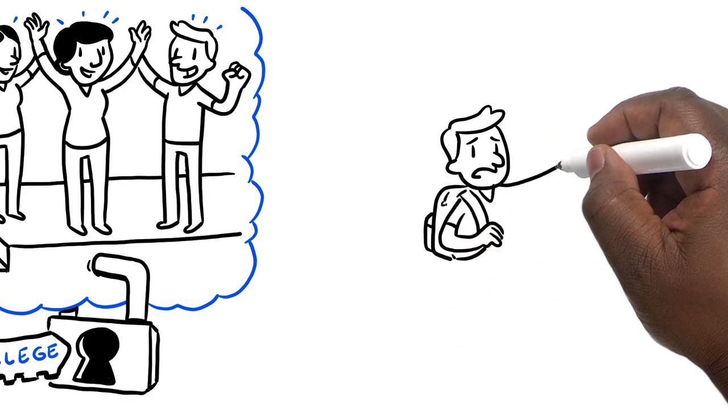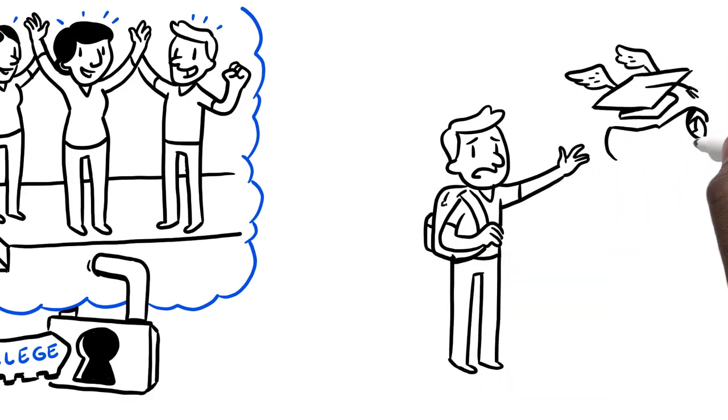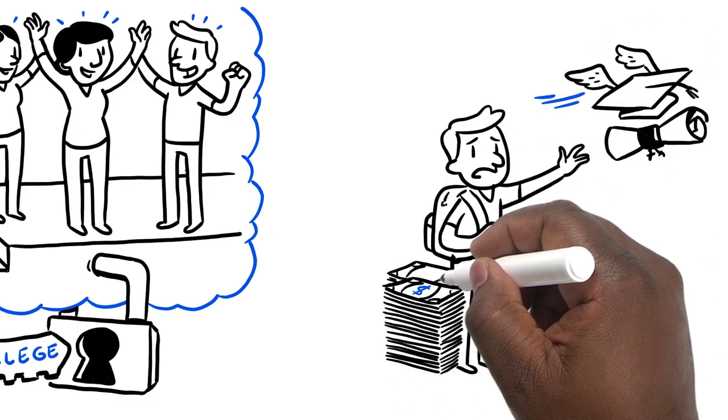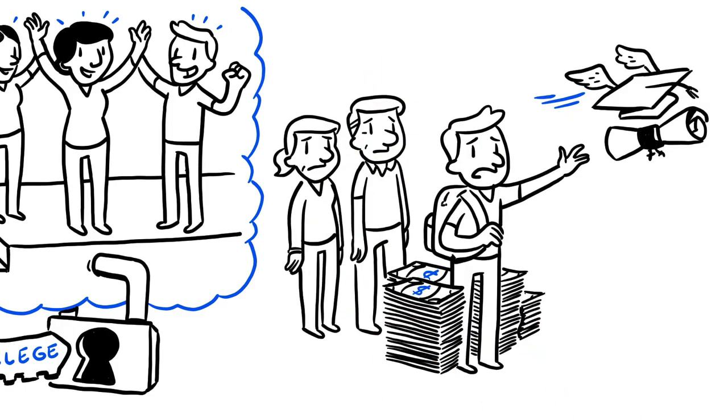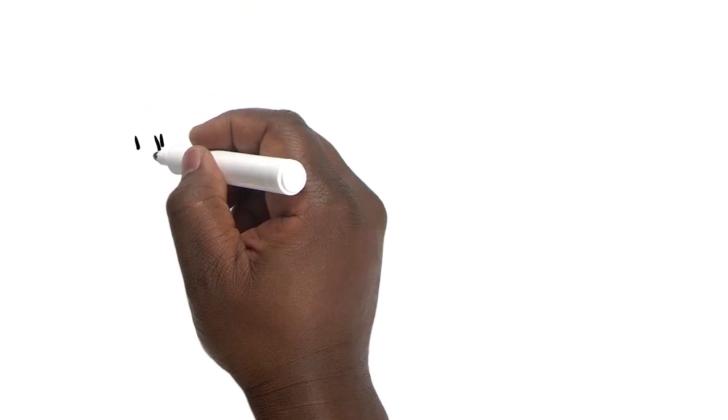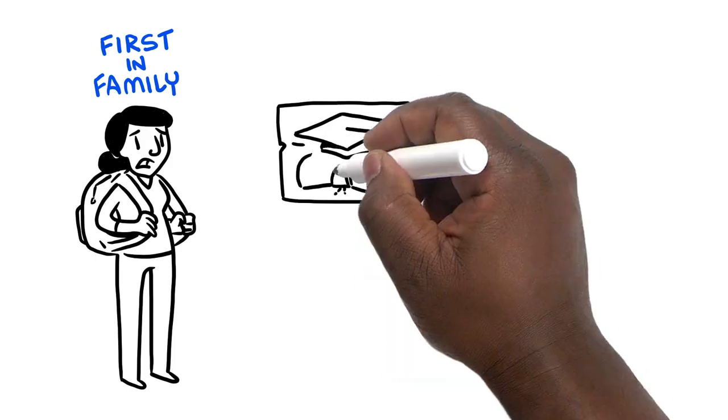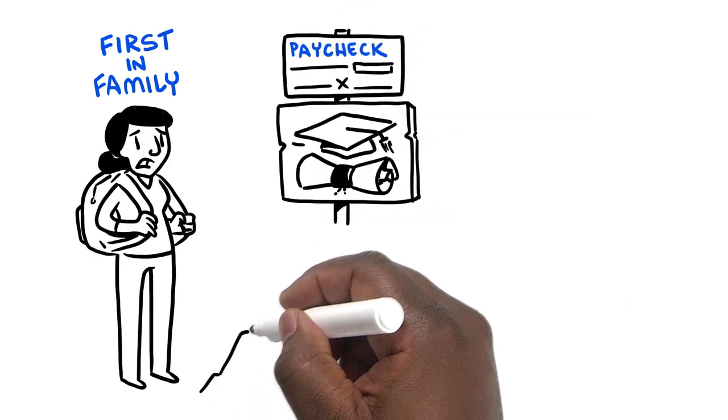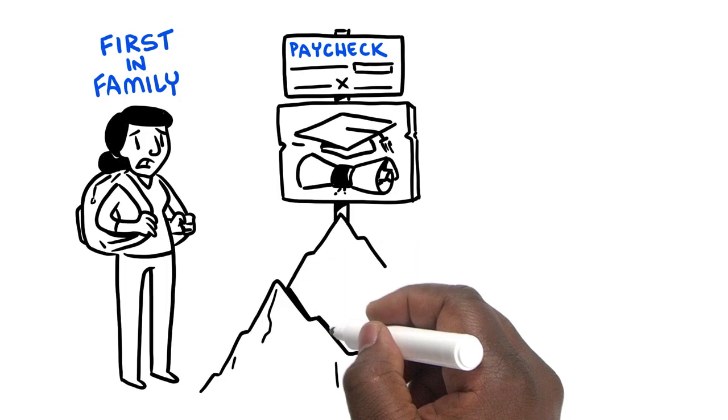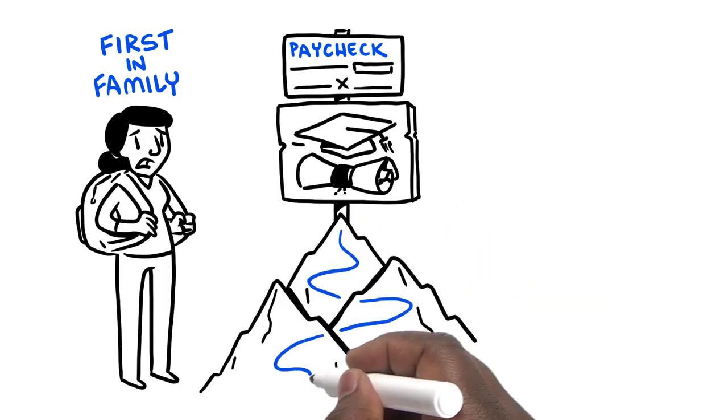But many American college students don't graduate on time, or at all, at a high cost to themselves, their families, and taxpayers. Students who are the first in their families to go to college face an even bigger struggle because no one has gone before them. These students are more likely to be low-income students and students of color.